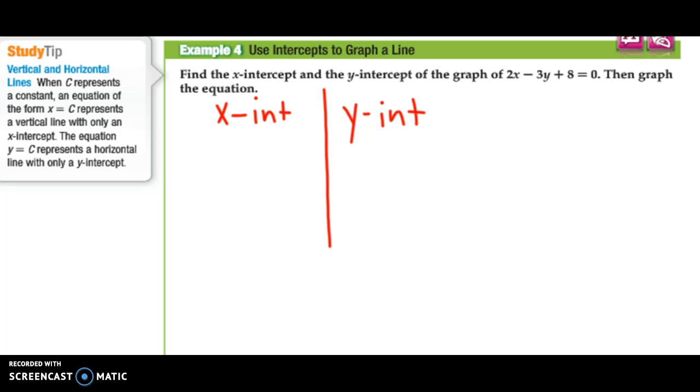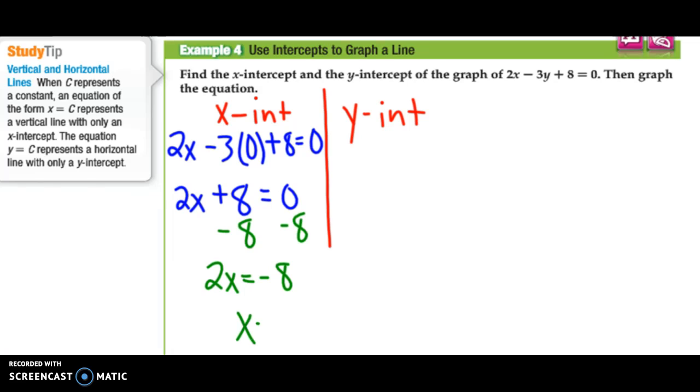I'm going to rewrite my equation, but put a 0 in for y. So it's 2x minus 3 times 0 plus 8 equals 0. I get 2x minus 3 times 0, well that's just 0, it goes away. Plus 8 equals 0. I want to solve for x. I subtract 8 from both sides, I get 2x is equal to negative 8. Divide by 2, x is equal to negative 4. So when y is 0, x is negative 4. This would be the point on the coordinate plane: negative 4, 0. That's my x-intercept.